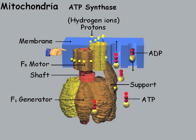The motor generator sets are anchored in the mitochondria membrane. The principal components are the motor, the shaft, the generator, and the support that holds it all together.